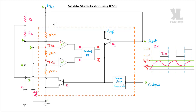Three 5k resistors equally divide the voltage potential difference between VCC and ground. The potential difference gives 2/3 VCC at the upper comparator inverting terminal and 1/3 VCC at the lower comparator non-inverting terminal. The two comparators produce high or low output, which feeds into the control flip-flop. The flip-flop then produces a corresponding output connected to the power amplifier and transistor Q1.